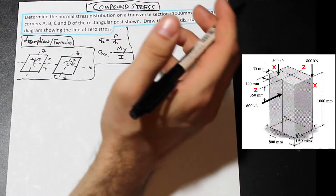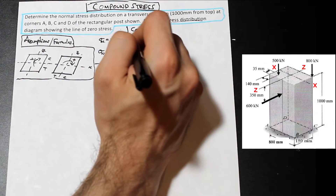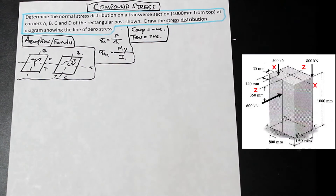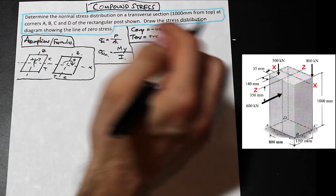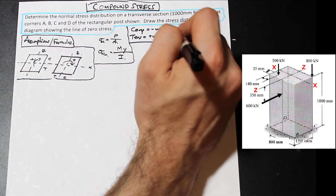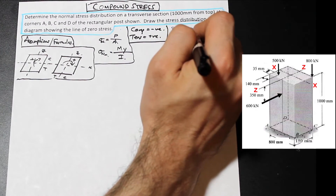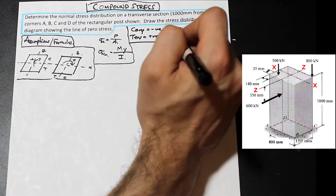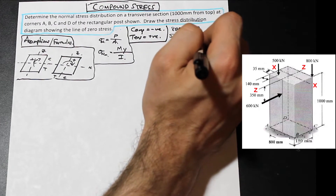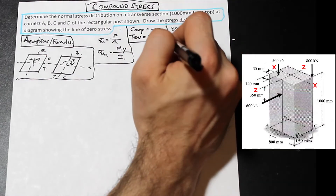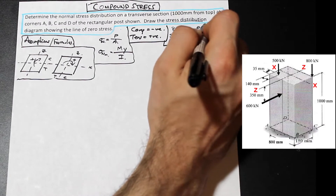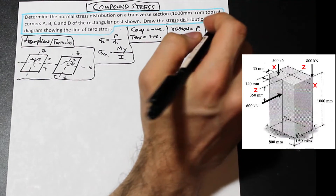In this question, compression is negative and tension is positive. Let's label our forces: the 800 kN on the right is P1, the 500 kN axial force is P2, and the horizontal force of 600 kN is H1.